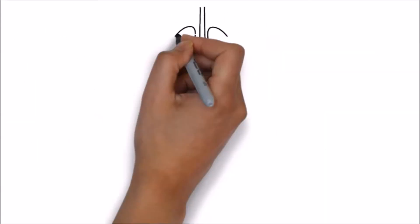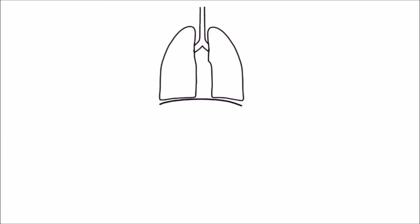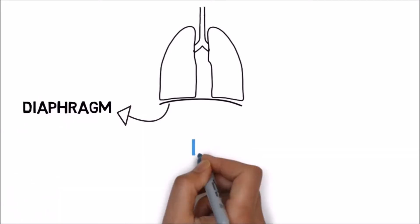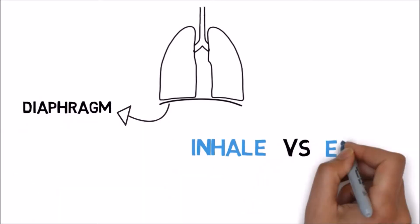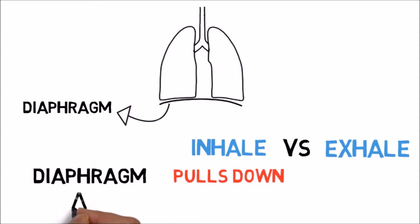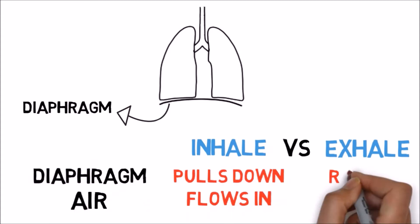Hiccups originate from the diaphragm, the muscle between your lungs and your stomach. The diaphragm most of the time works perfectly, pulling downward when you inhale to help air enter your lungs and relaxing when you exhale to flow air out.